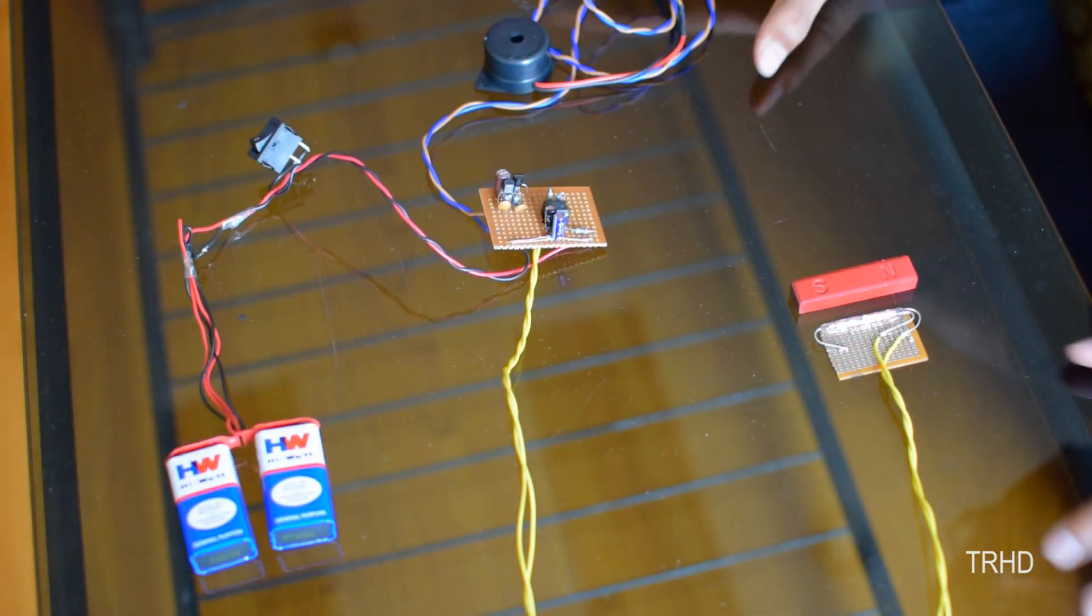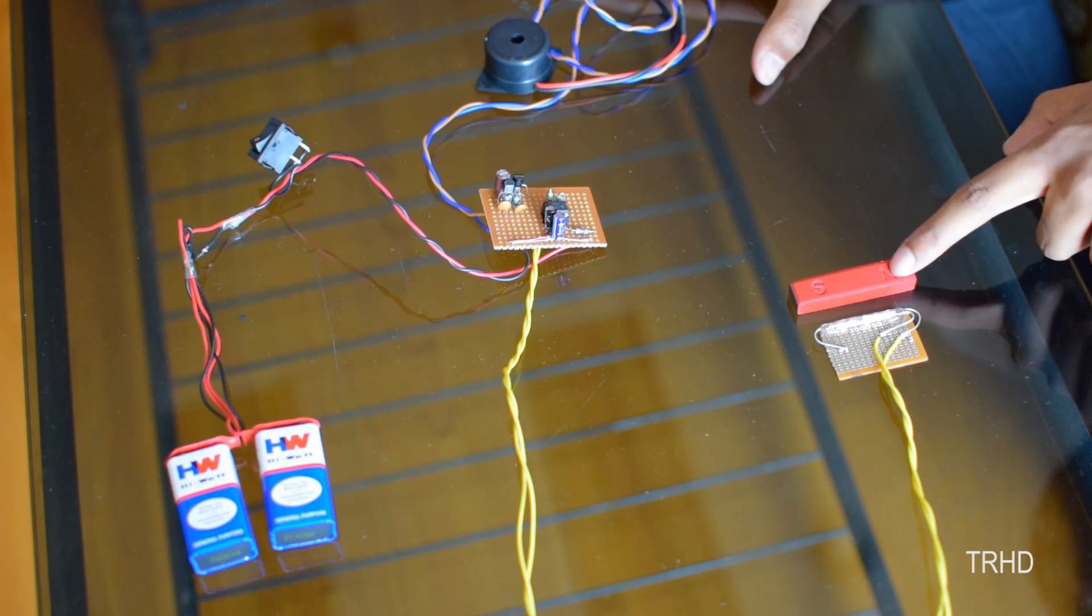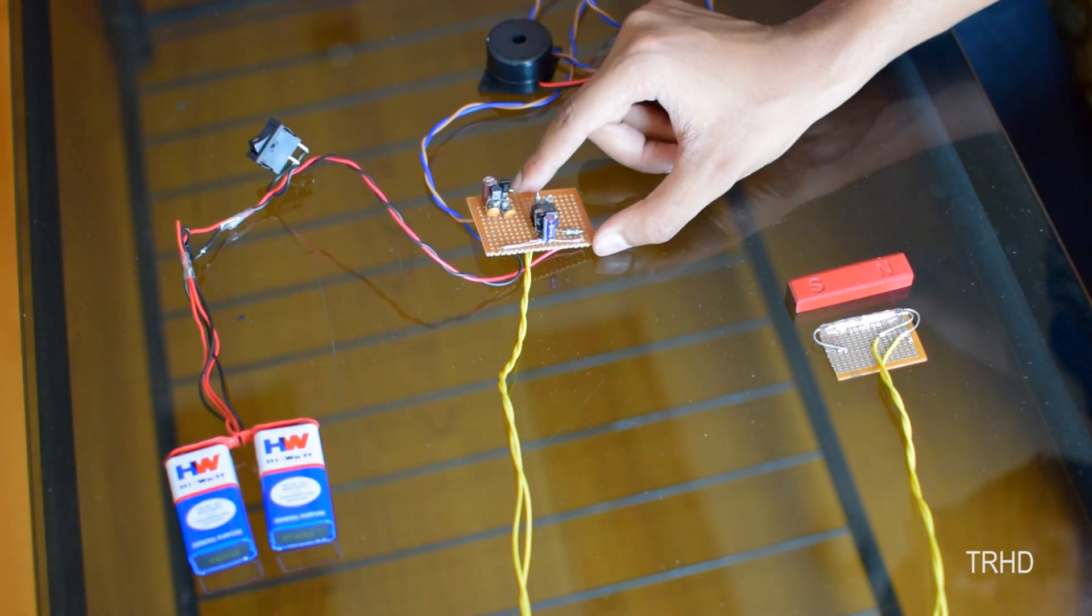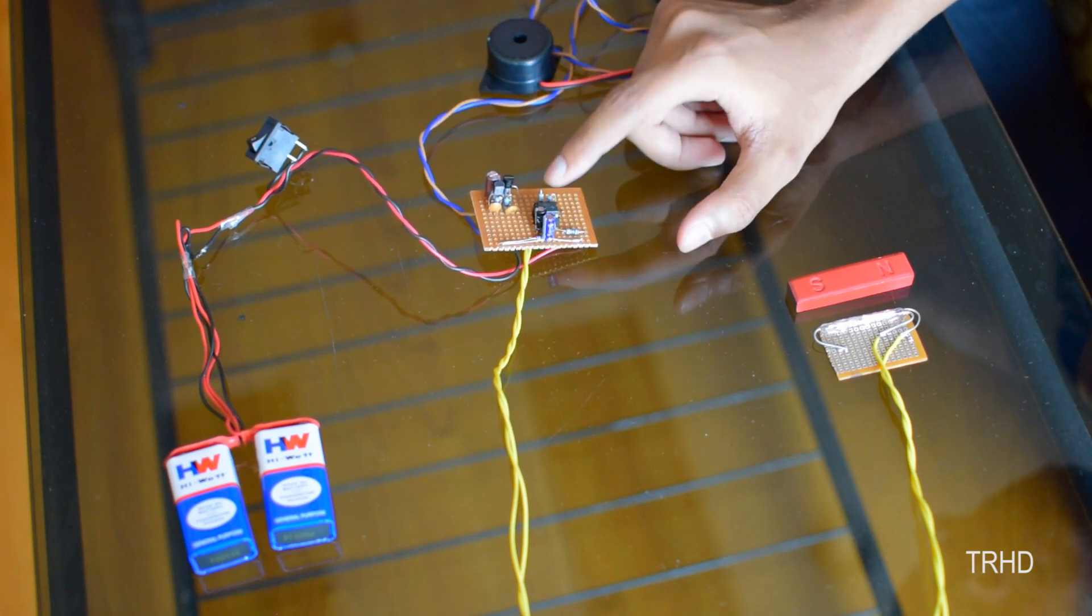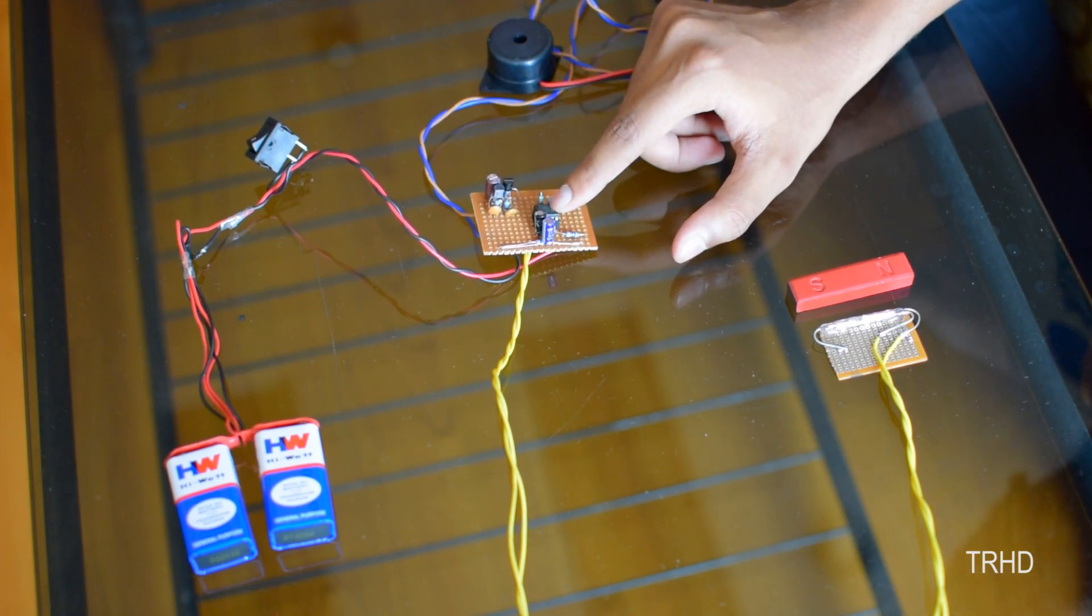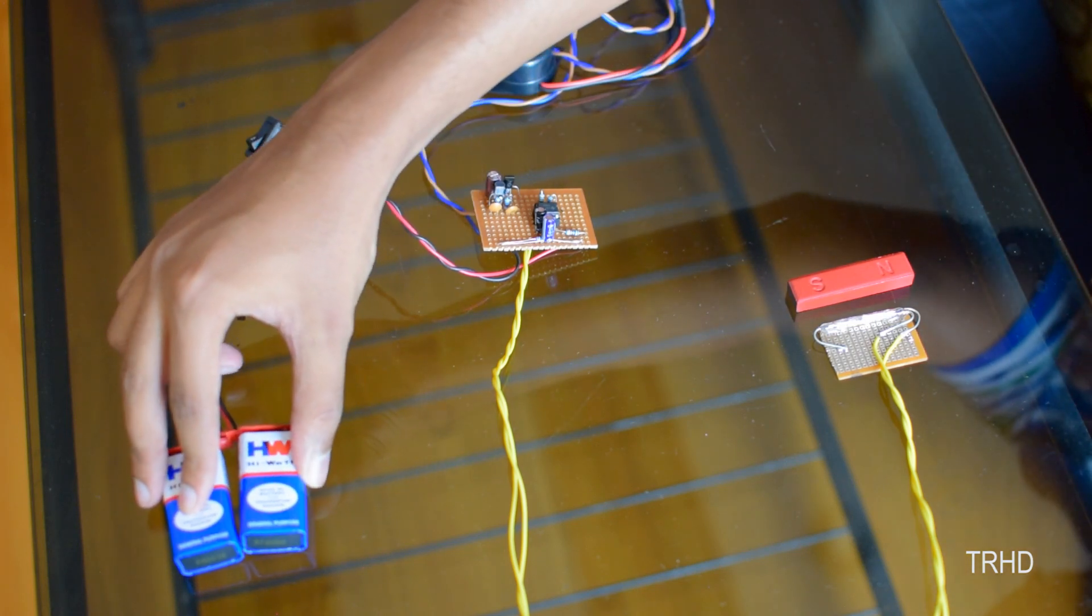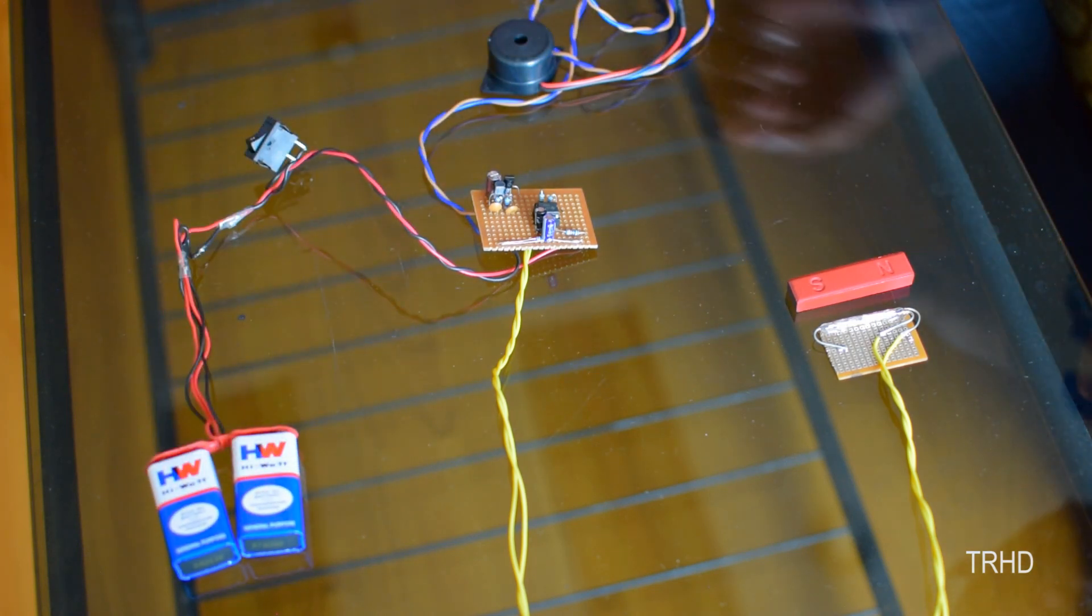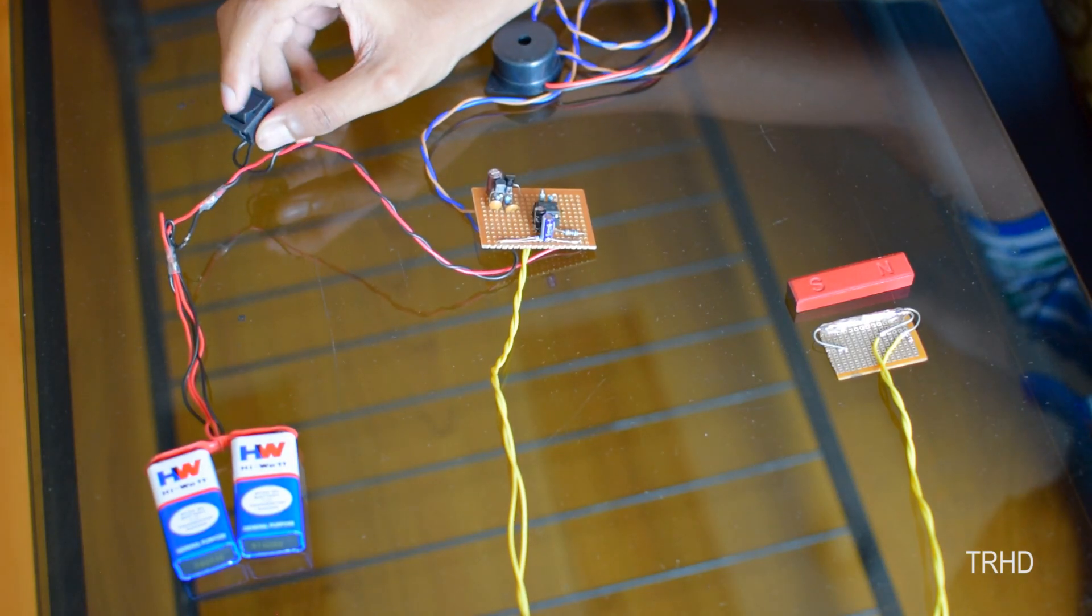This is the circuit that I have made. You can see this is the reed switch which has to be fixed in the door frame, and this is the magnet which has to be fixed in the door. This is the PCB that I have used where I have placed the SCR and a 555 IC. I use this 555 IC as an oscillator to beep the continuous buzzer. These are the 9-volt batteries that I have used to power up the circuit. This is the toggle switch that I have used to switch on or off the circuit.